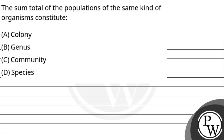Hello, let's read the question. The question is: the sum total of population of the same kind of organism — what could constitute it? Could it be colony, genus, community, or species?